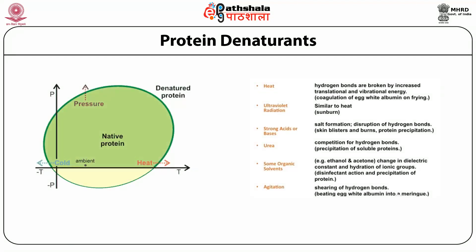Regarding protein denaturants: a graph shows how the balance between pressure and temperature maintains the three-dimensional structure. Moving towards higher or lower temperature, or to lower pressure, causes the protein to denature. A wide range of temperature and pressure maintains the three-dimensional structure as shown in green. Several denaturants are used to denature protein: heat, ultraviolet radiation, strong acids or bases, urea and guanidinium hydrochloride, organic solvents such as ethanol and acetone, and agitation, which causes denaturation by shearing of hydrogen bonds.